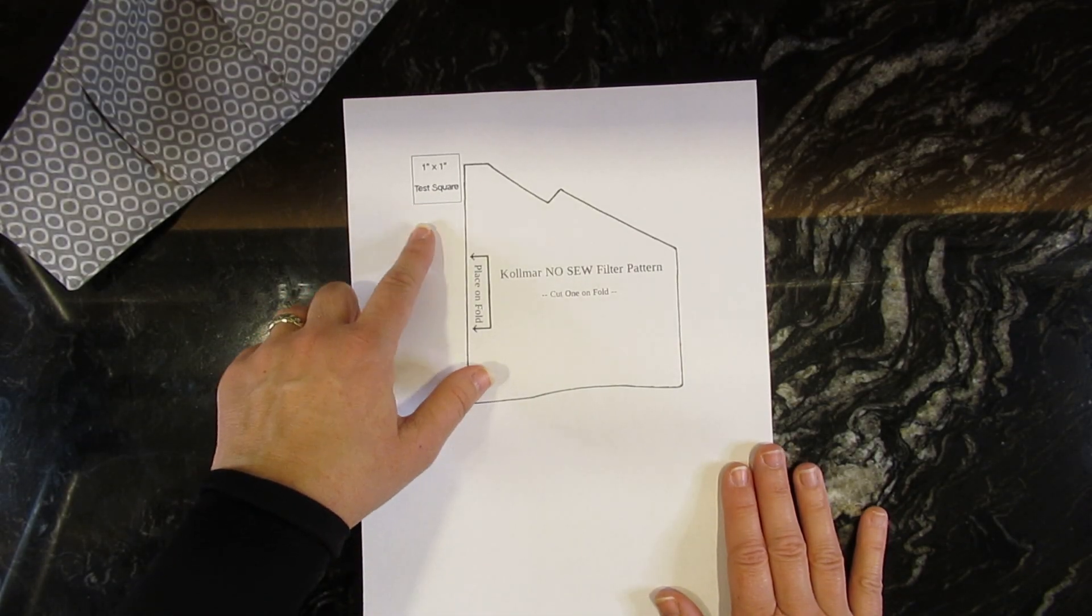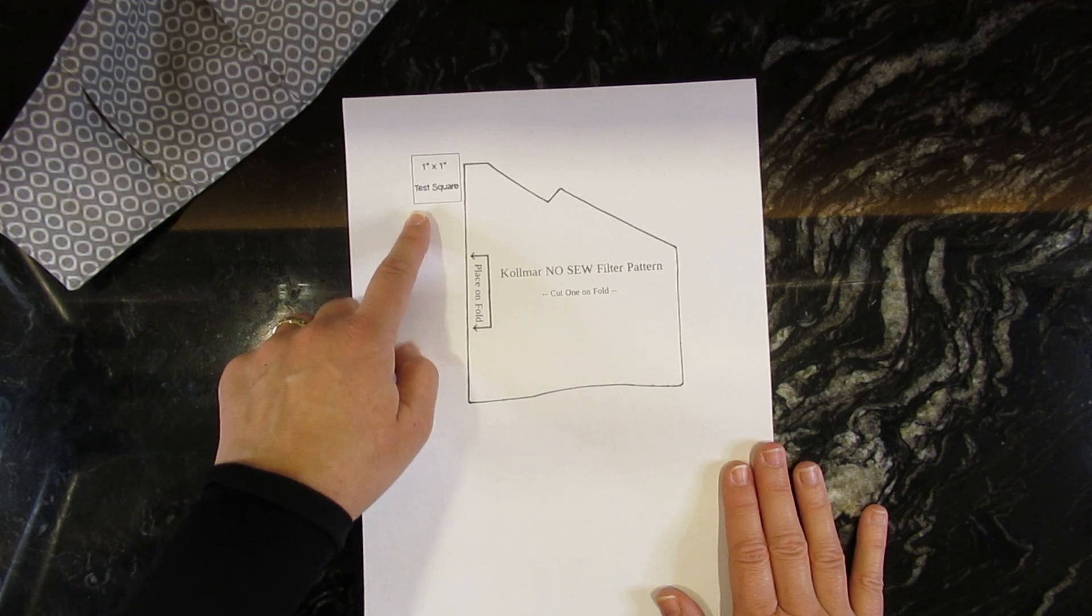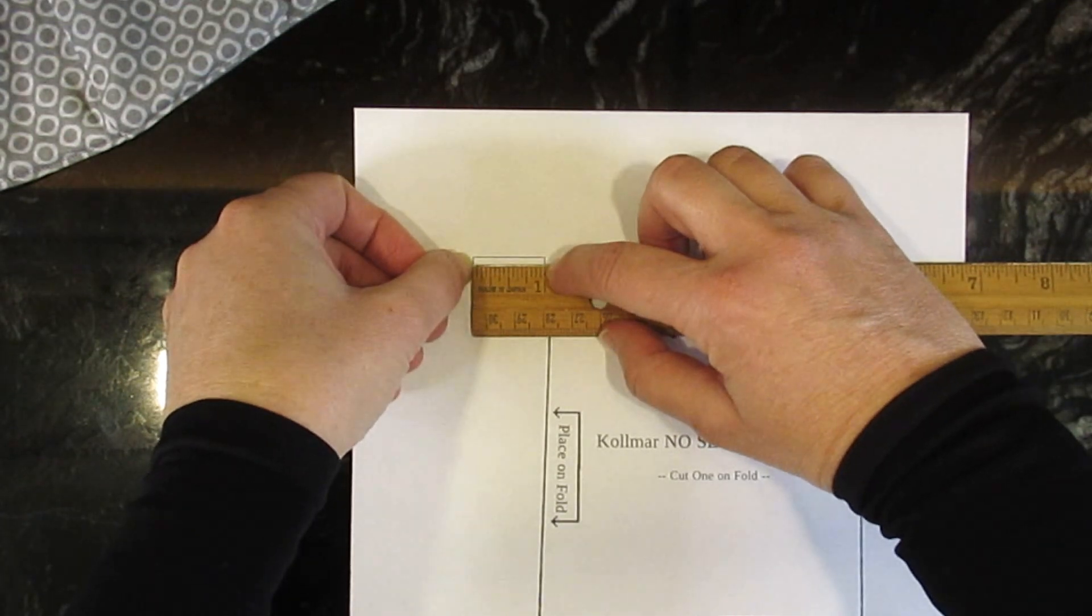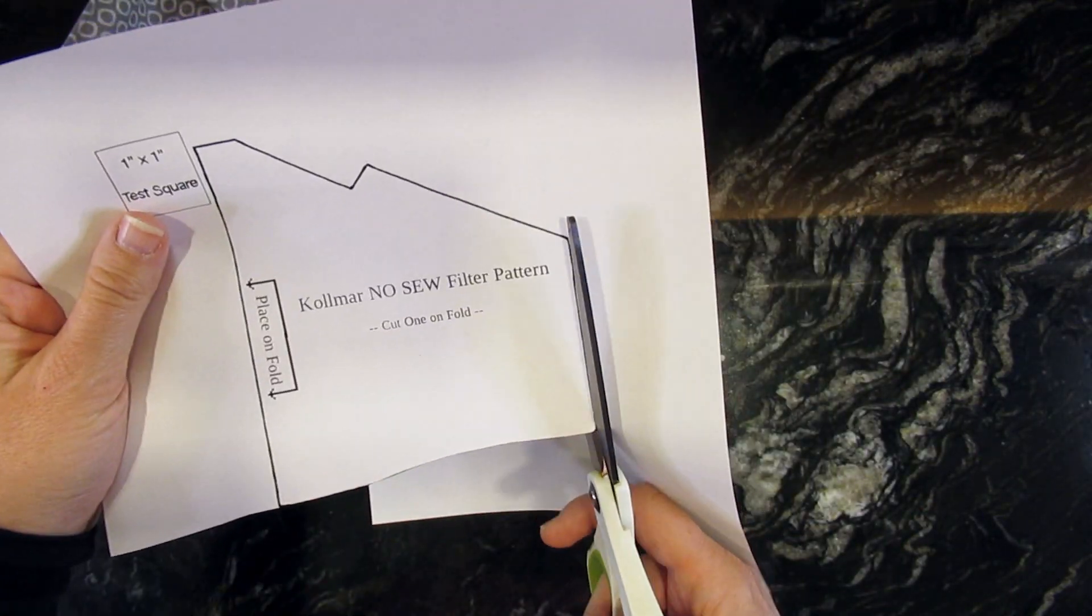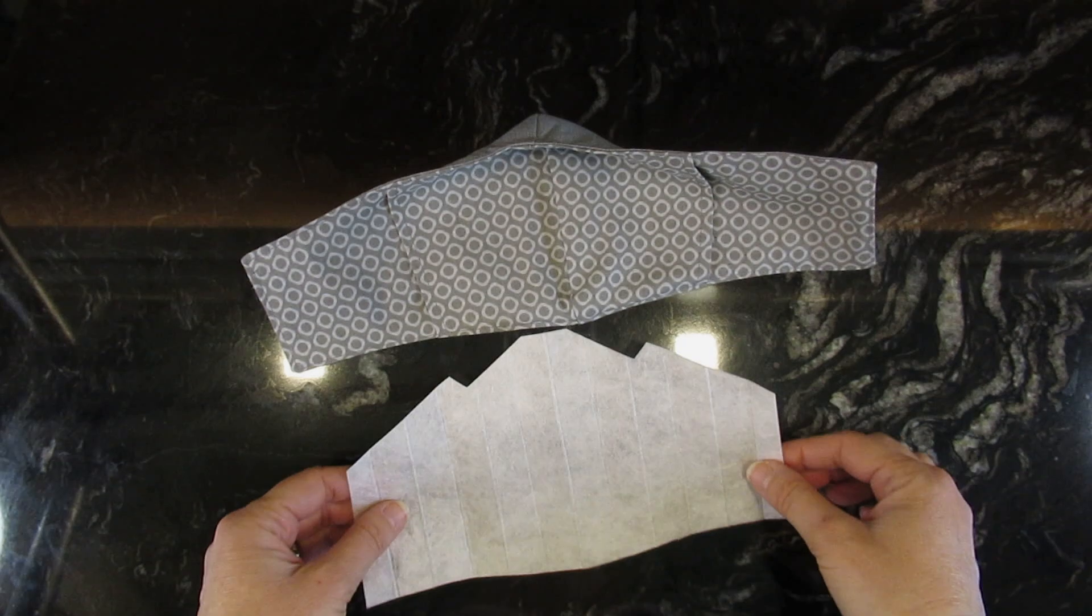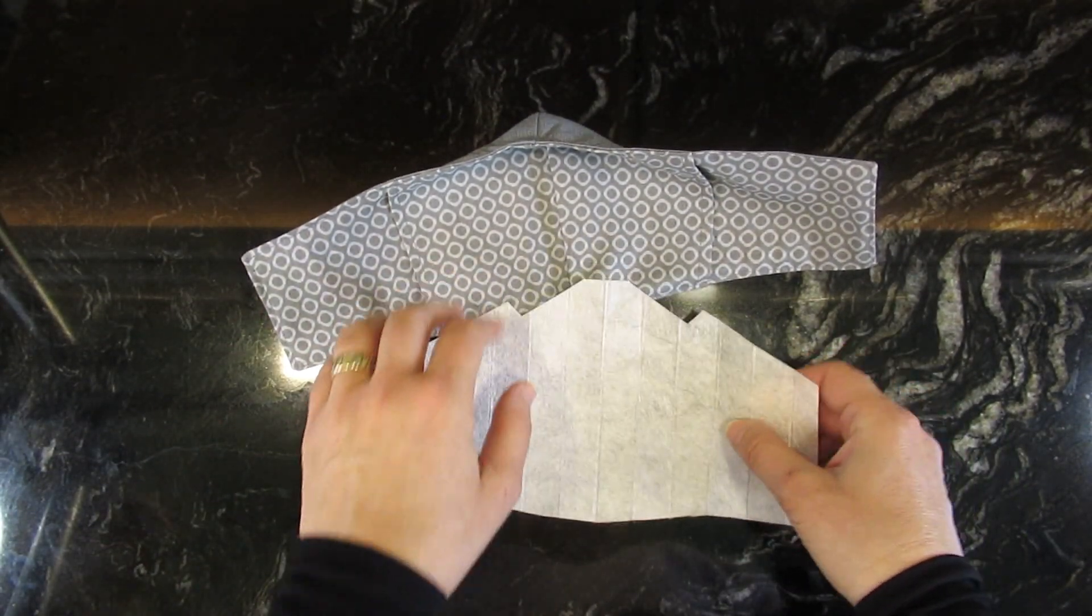This pattern PDF is linked below. Please print the pattern and check the gauge block to make sure it correctly measures one inch. Cut the pattern out with paper scissors. I will defer to the New York Times article linked below to discuss filter choices.